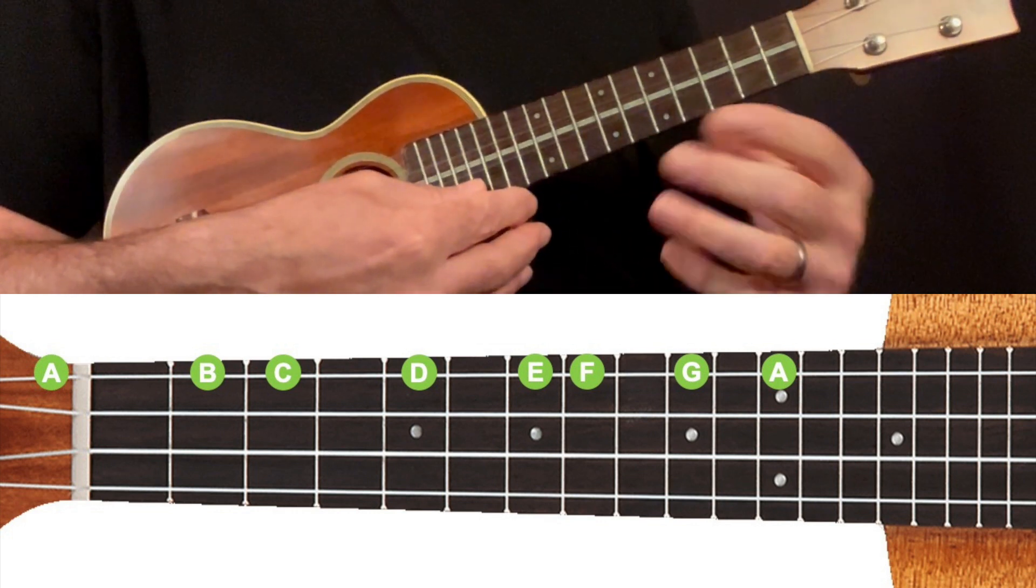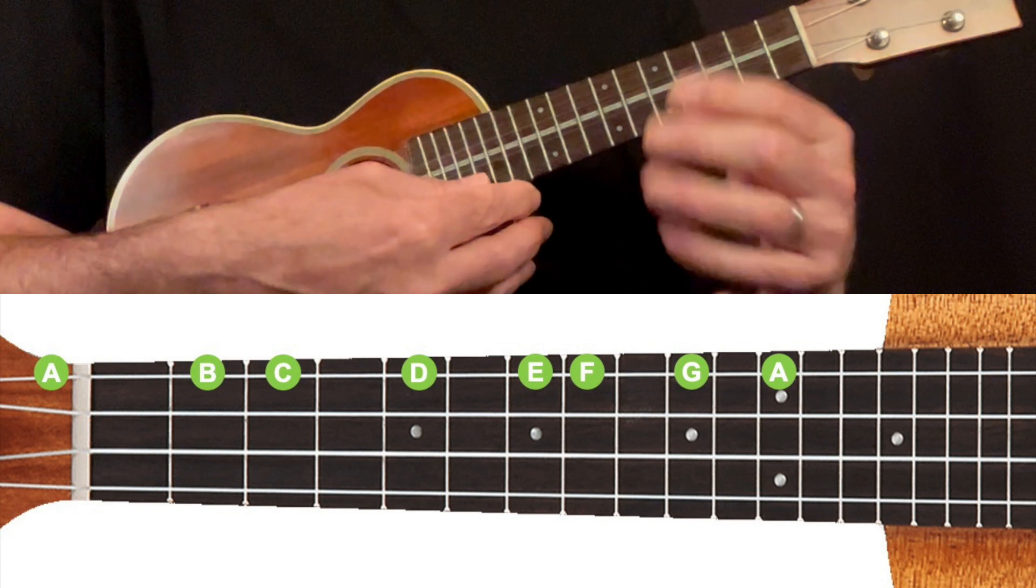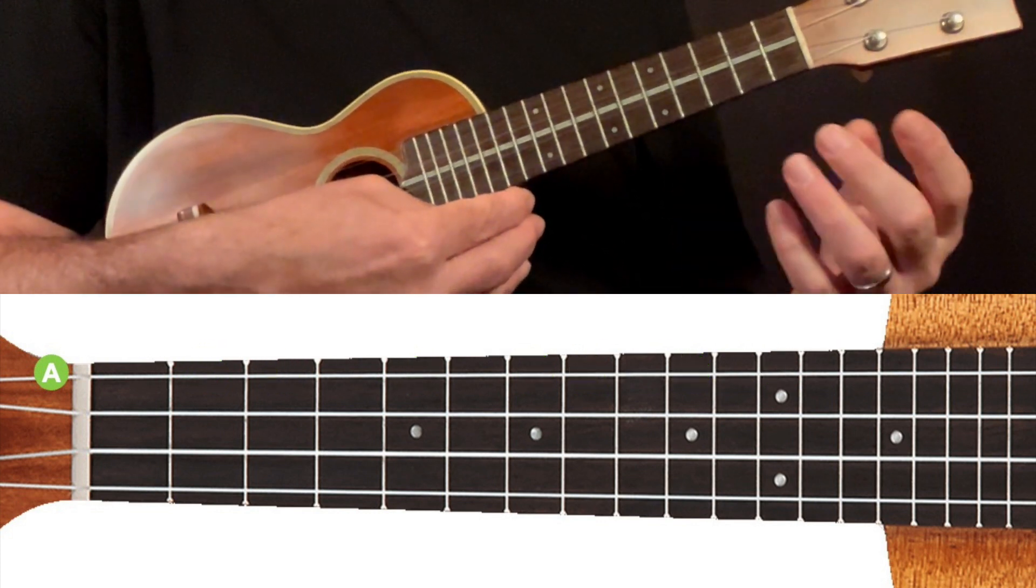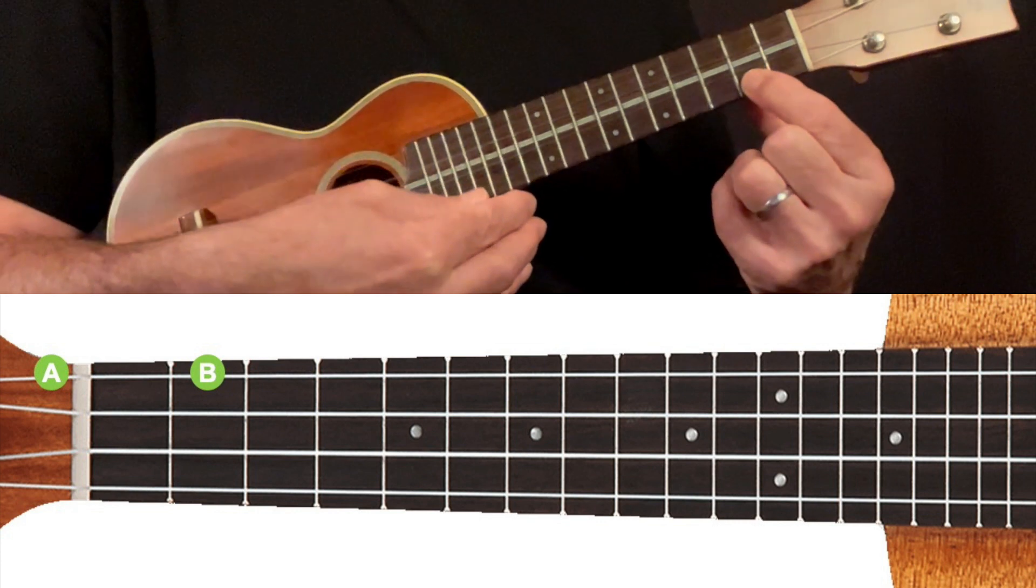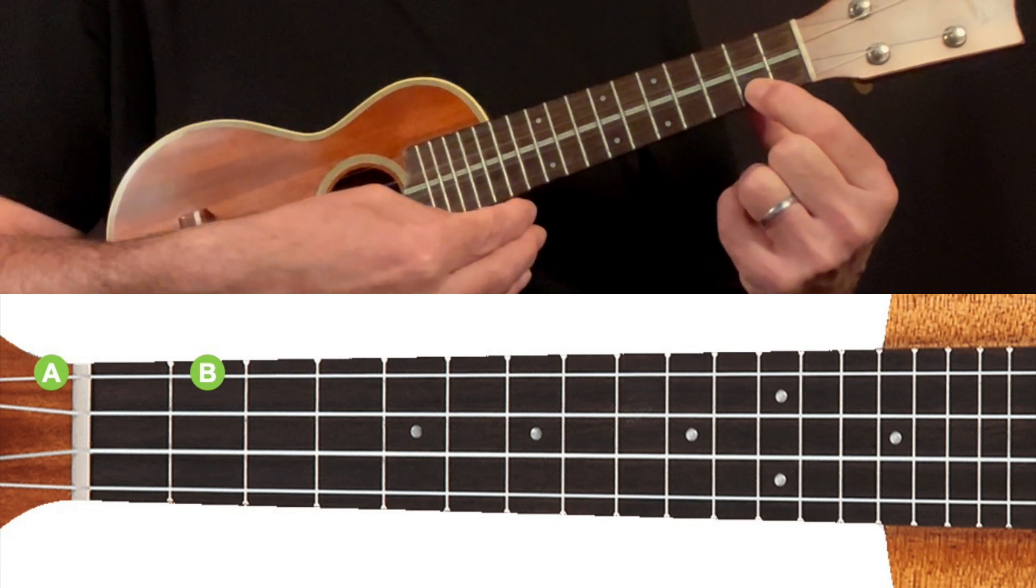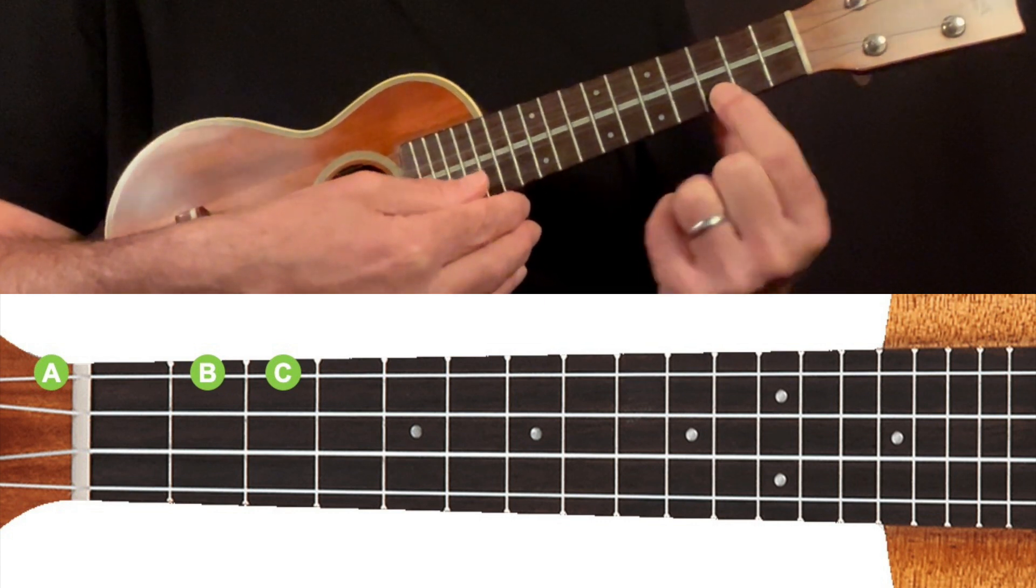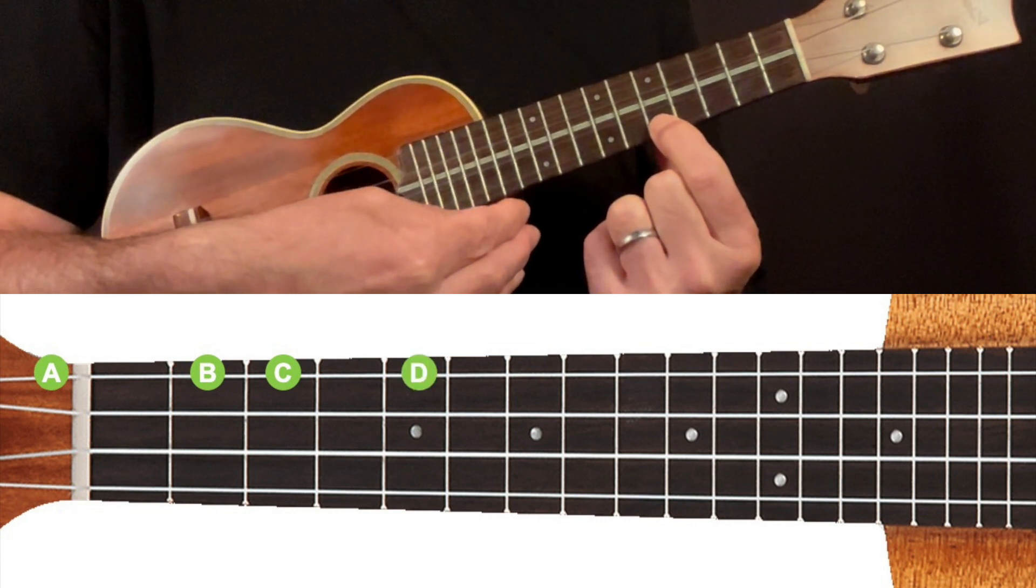So if we just play these notes in sequence from the open string to the twelfth fret, we would have A at the open string, B at the second fret, C at the third fret.